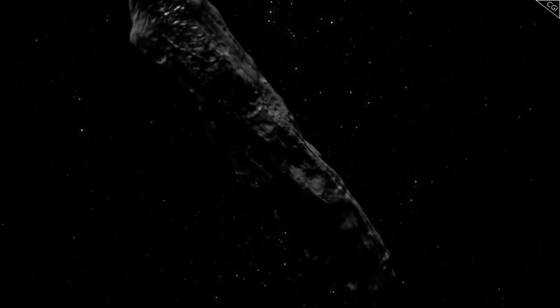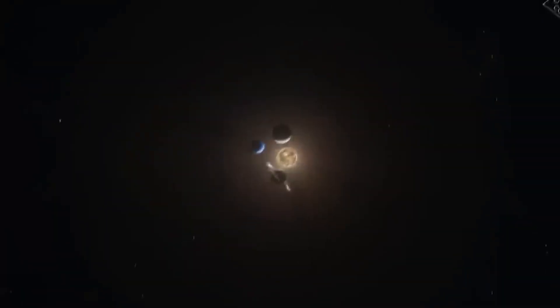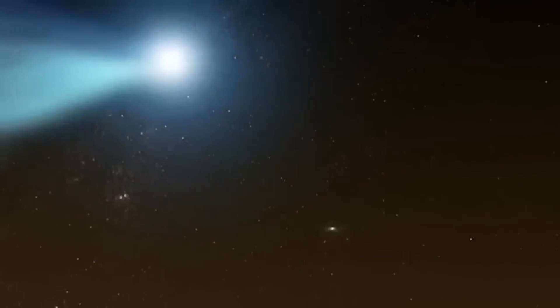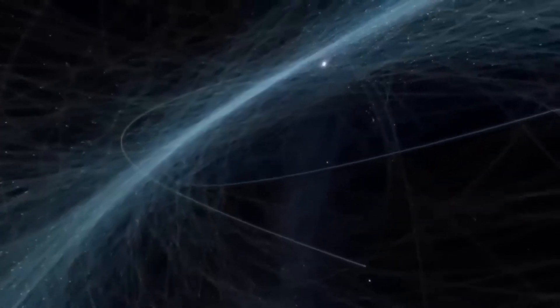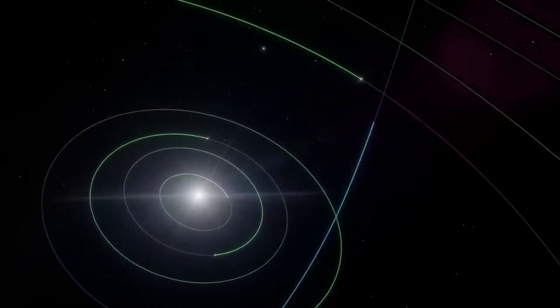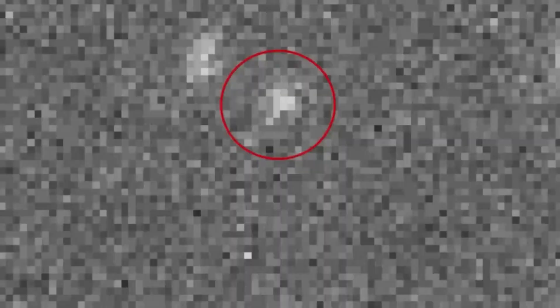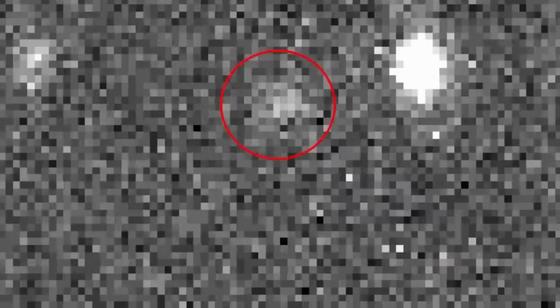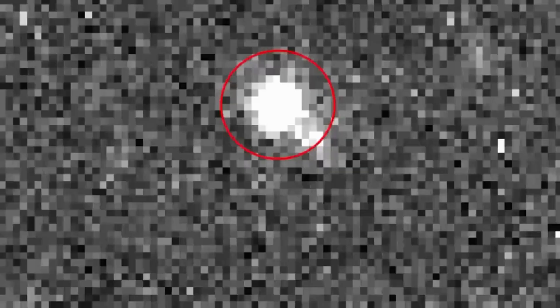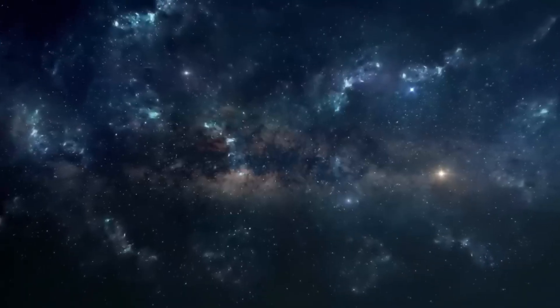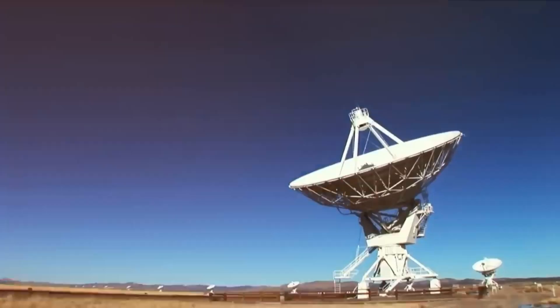Scientists named it 3i/Atlas, and the 3i part is really important. It means this is only the third interstellar object we've ever found visiting our solar system. Think about that for a moment. In all of human history, with all of our telescopes and technology, we've only found three visitors from other star systems. The first was a mysterious cigar-shaped object called Oumuamua back in 2017. Then came Comet Borisov in 2019. And now we have 3i/Atlas.